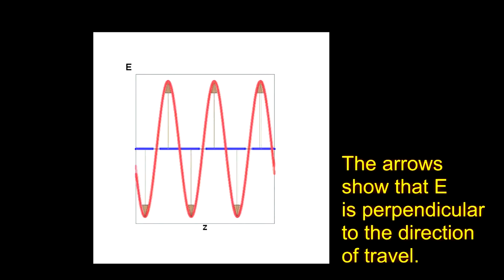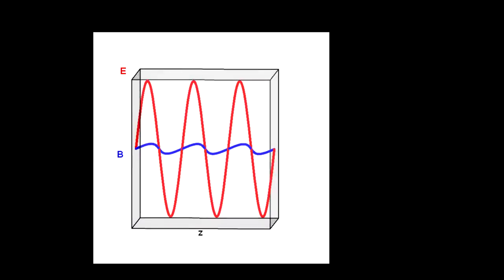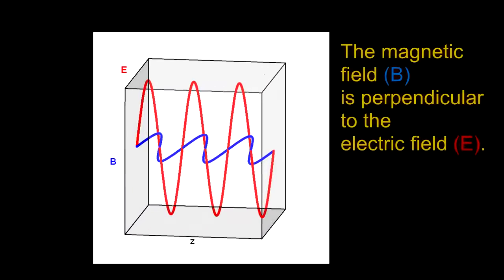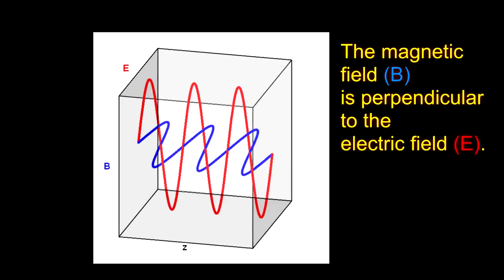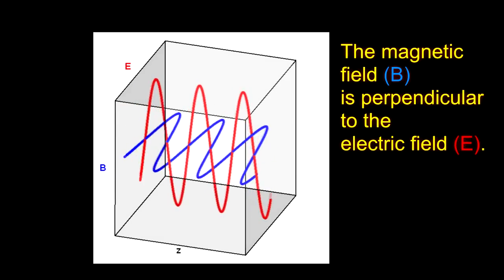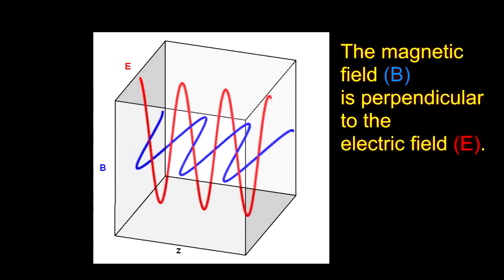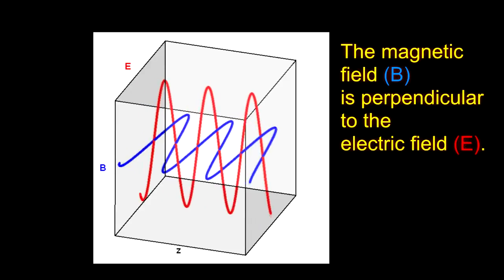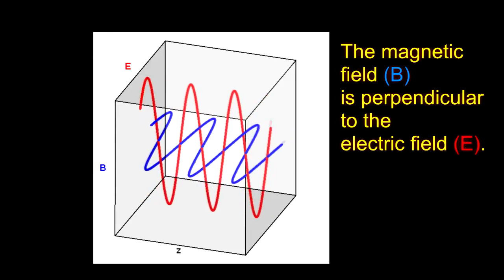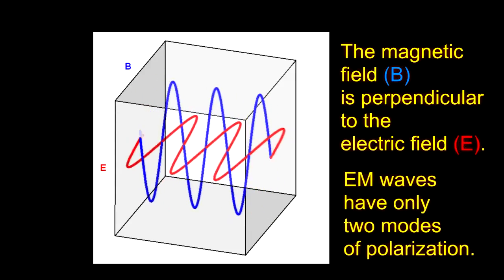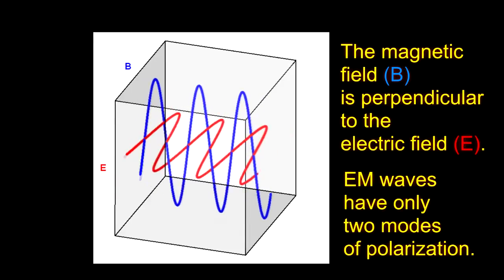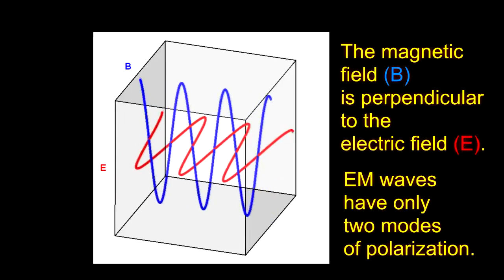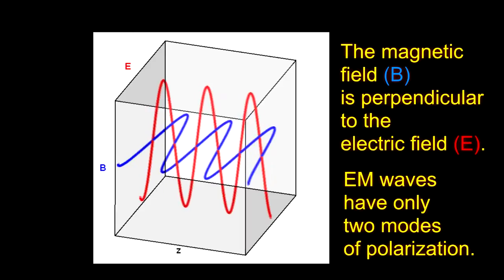If we move to three dimensions, then you can see that the magnetic field B is perpendicular to the electric field and along the y-axis. This is one possible orientation. There's a second orientation with the electric and magnetic fields swapped. That's all the possibilities. EM waves have only two modes of polarization.